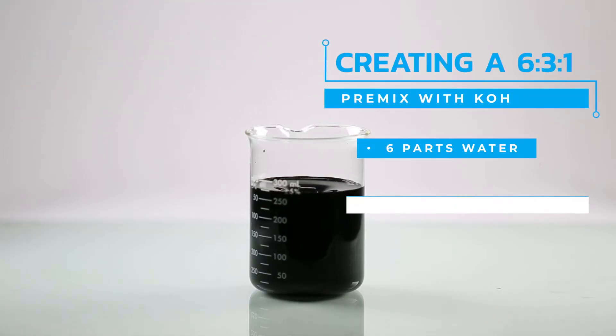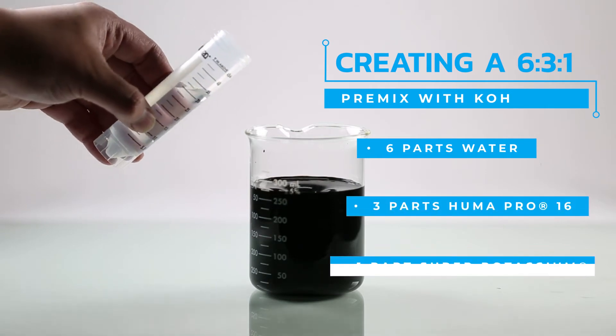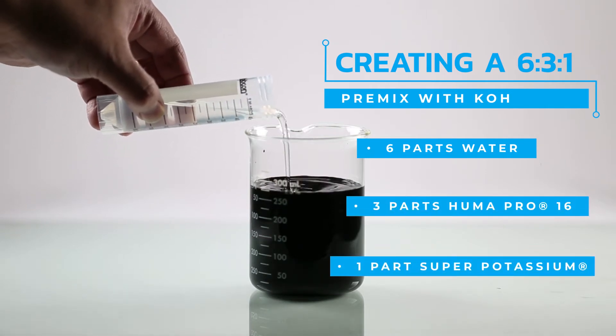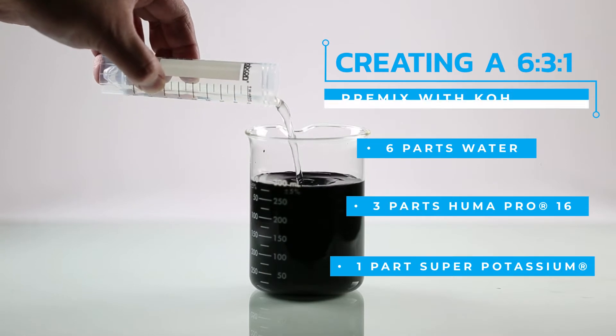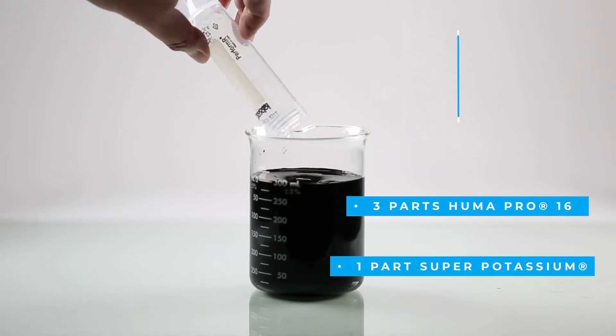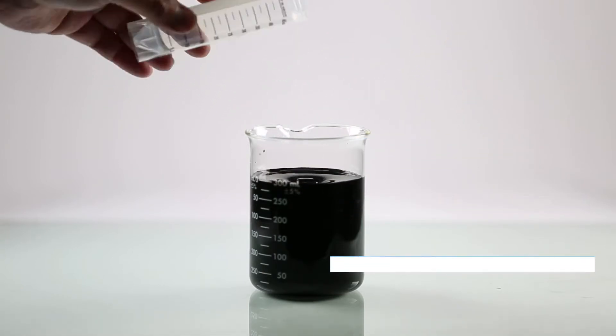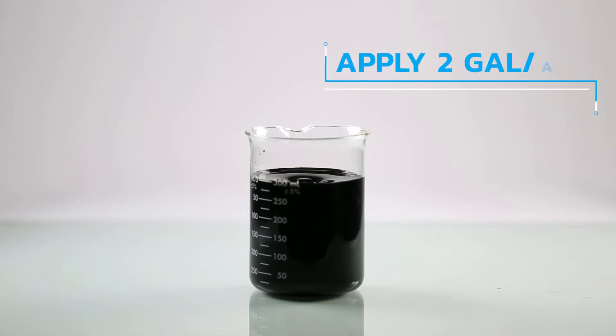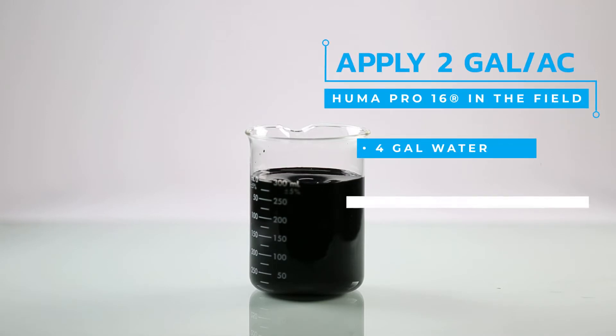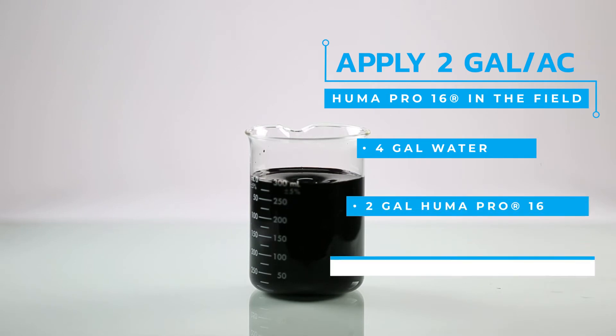Mix 6 parts water with 3 parts Humapro and 1 part 50% potassium hydroxide solution, such as our super potassium. Make sure to keep it well stirred or agitated. This means that if you wanted to apply 2 gallons of Humapro 16 to an acre of crops using sprinklers, you would premix 4 gallons of water with the 2 gallons of Humapro 16 and 2 thirds gallon of super potassium.